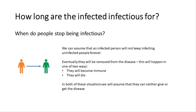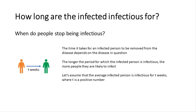Let's assume removal happens in one of two ways: they either become immune or they die. In both cases, we assume they can neither give nor get the disease ever again. You can build more complex models where people could get the disease again, but that's beyond the scope of these videos. We're going to assume it's the same for everyone and that someone is infected for T weeks on average, where T is a positive number — it could be one week, two weeks, any number of weeks.